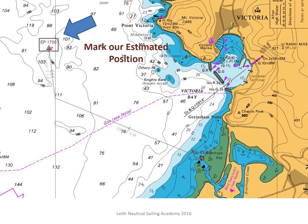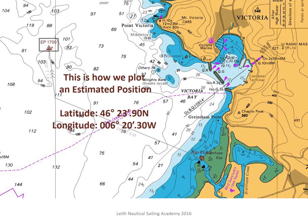We can now look up the latitude and longitude of our position. Using a plotter or a pair of dividers we can now read off our latitude and longitude. Our latitude is 46 degrees 23 minutes decimal 90 north. Our longitude is 006 degrees 20 minutes decimal 30 west.